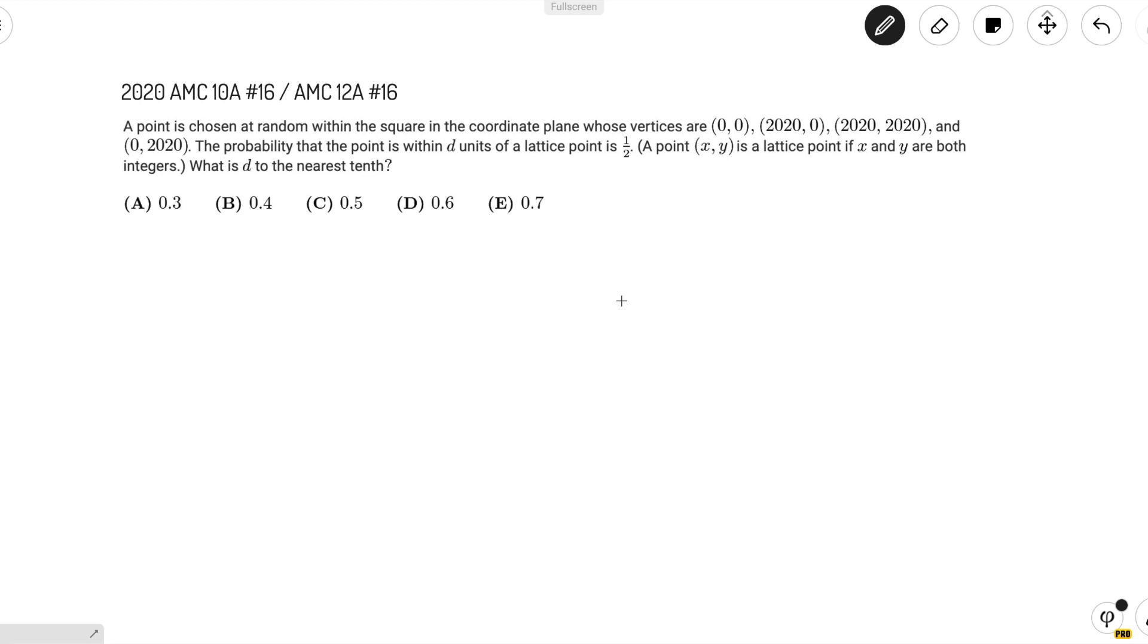The probability that the point is within d units of a lattice point, which is a point (x, y) where both x and y are integers, is 1/2. What is d to the nearest tenth?